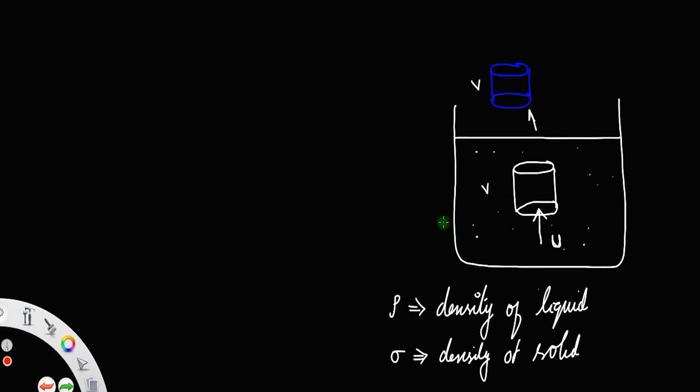Definitely an upthrust acts on this body, and since it has mass, it has a weight W which acts downward.